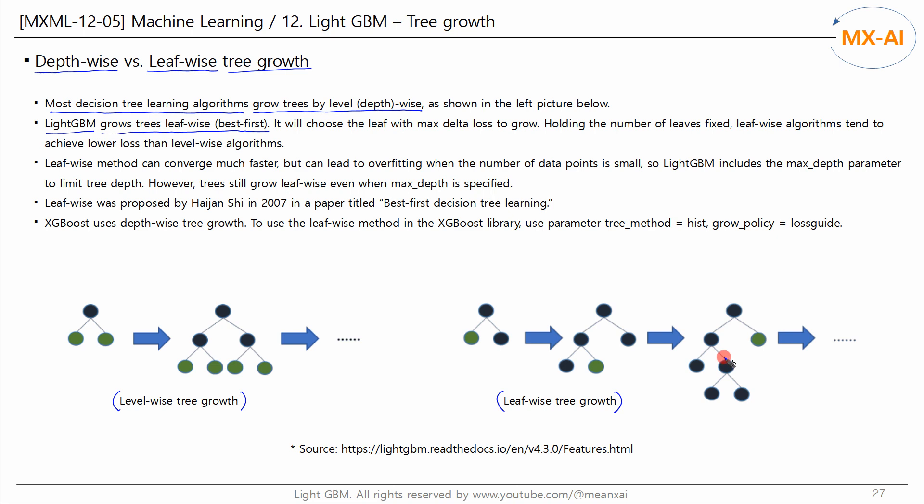Trees could be unbalanced and grow in only one direction. It will choose the leaf with max delta loss to grow. That is, it splits at the node with the highest loss change. Holding the number of leaves fixed, leaf-wise algorithms tend to achieve lower loss than level-wise algorithms.